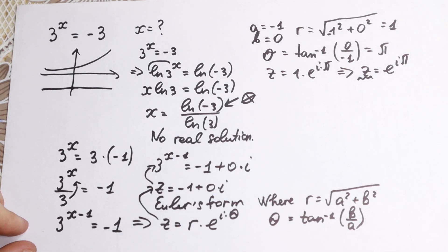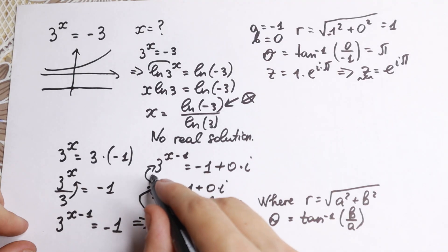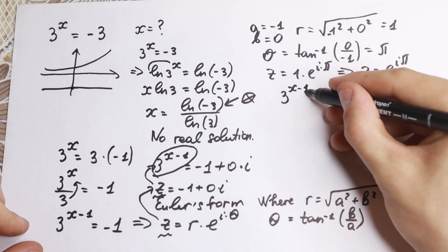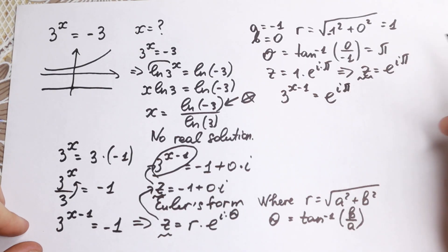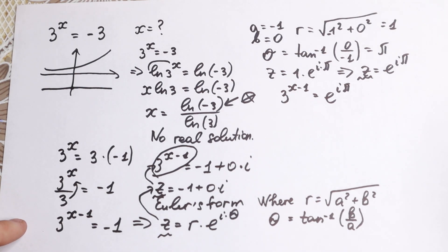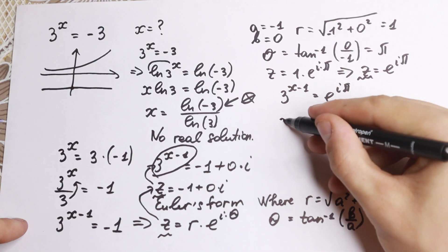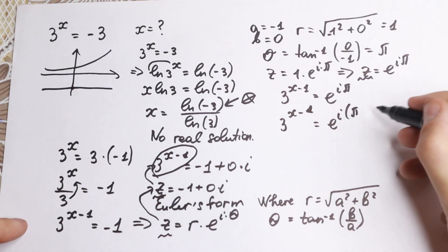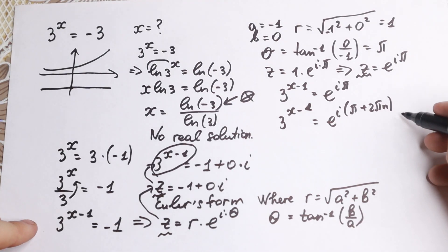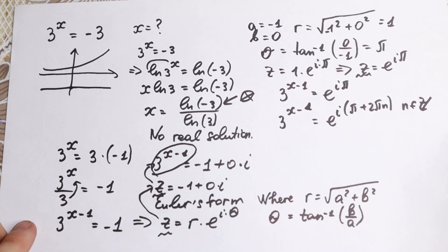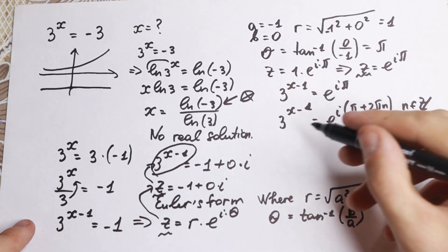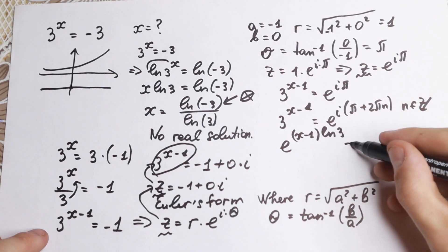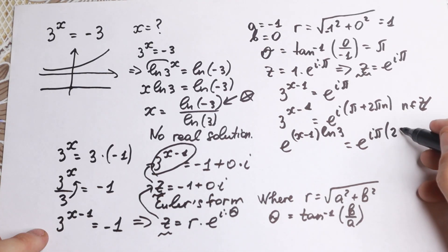Since z equals e to the power i pi, and 3 to the power x minus 1 equals z, we can write 3 to the power x minus 1 equals e to the power i times (pi plus 2 pi times n), where n is a set of whole integers. Taking the natural log on both sides, we get (x minus 1) times natural log 3 equals e to the power i pi times (2n plus 1).